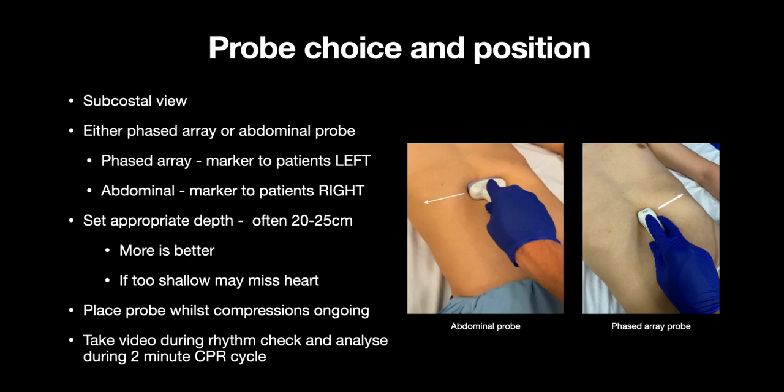To perform echo during a cardiac arrest, the subcostal view is the optimal view as it can provide useful information and is also easier to get than some of the other echo views. Either the phased array or abdominal probe can be used, remembering that the marker will face a different direction depending on which probe is used. Set the appropriate depth, which is usually around 20cm. If this is set too low, you may waste valuable time readjusting this during the rhythm check.